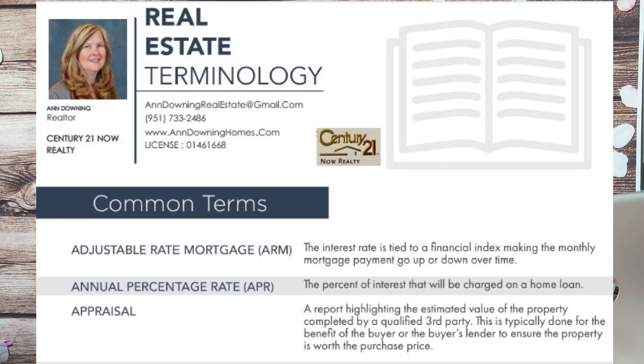Adjustable Rate Mortgage: The interest rate is tied to a financial index, making the monthly mortgage payment go up or down over time. A lot of people try and go for a fixed percentage rate for a mortgage, so you have no surprises with your monthly payment increasing.